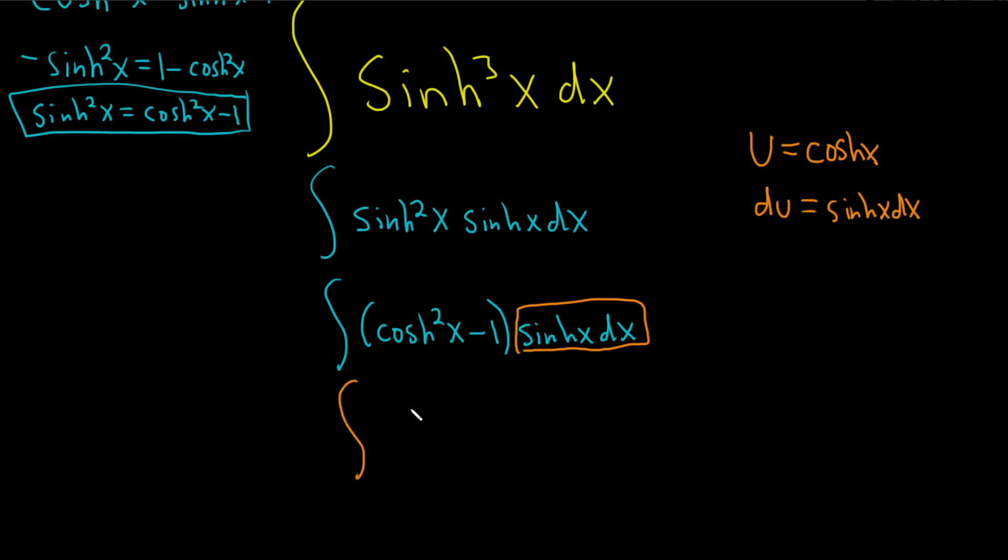So cosh is u, so this will be u squared minus 1 du. Really, really nice. And we can just integrate each piece. So u squared integrates to u cubed over 3, just using the power rule. And then the 1 integrates to u, so minus u plus our constant of integration, capital C.